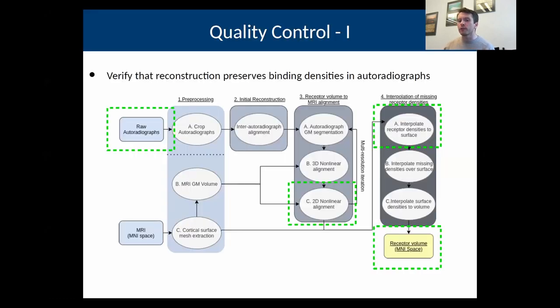That's where this final step of quality control comes in. I've taken a bit more time than I thought, but briefly, the idea, one part of the quality control is to verify that the values we produce in the reconstructed volume are the same as were in the autoradiographs. That is to say that the reconstruction pipeline doesn't distort the values in one way or another.